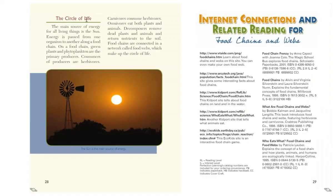The circle of life. The main source of energy for all living things is the sun. Energy is passed from one organism to another along a food chain. On a food chain, green plants and phytoplankton are the primary producers. Consumers of producers are herbivores. Carnivores consume herbivores. Omnivores eat both plants and animals. Decomposers remove dead plants and animals and return nutrients to the soil for plants to grow anew. Food chains are connected in a network called food webs, which make up the circle of life. And that was food chains and food webs. Thank you so much for joining us for today's science reading. Keep up your fine work and we'll see you in the next one. Take care and have a great rest of your day.